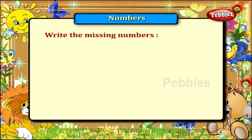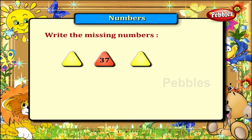Let us find the missing numbers before 37 and after 37. It is 36 before 37 and 38 after 37.